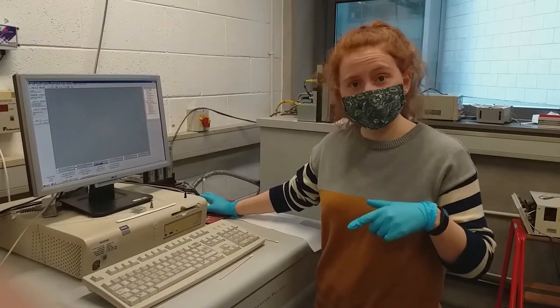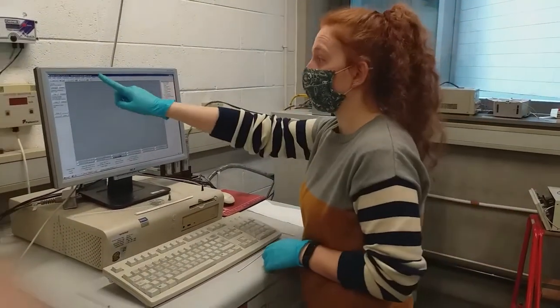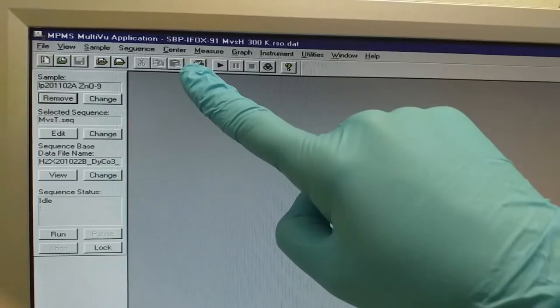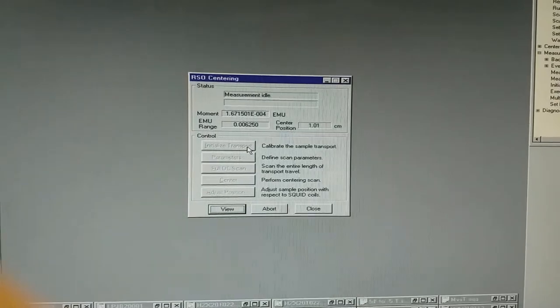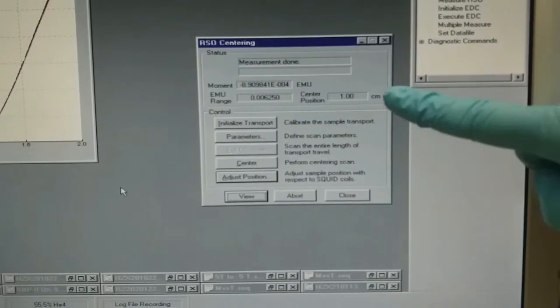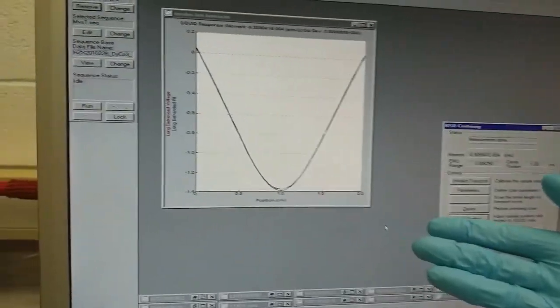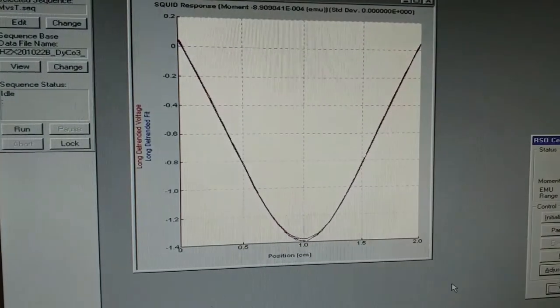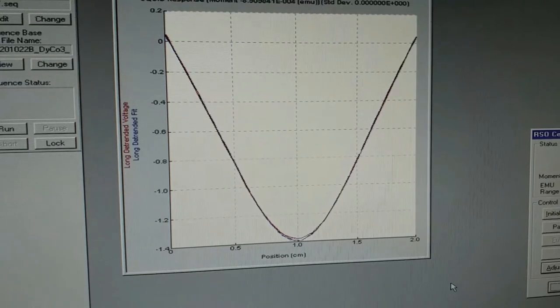Now I need to center the sample to make sure that it's at the center of the SQUID pickup coils, and I do this by clicking the center button here. I click initialize transport to lower the sample down, and then in the parameters window I can define the scan length. I have set the length to 2cm so I want the center to be at 1cm. I adjust the position until I get this. Here you can see the voltage response curve and its fit. At the minimum here the sample is exactly centered between the coils, so you can see that this is ready to go.